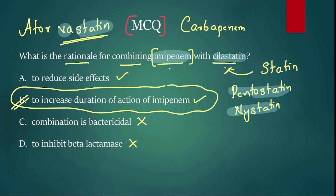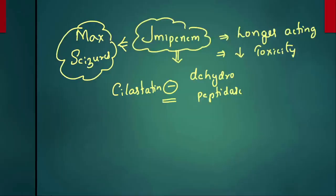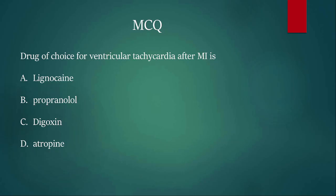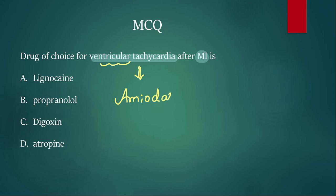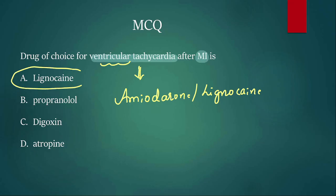The last MCQ: drug of choice for ventricular tachycardia after MI. The drug we usually use is amiodarone, but since amiodarone is not in the options, we go with lignocaine. The options are lignocaine, propranolol, digoxin, and atropine. The drug of choice here is lignocaine.